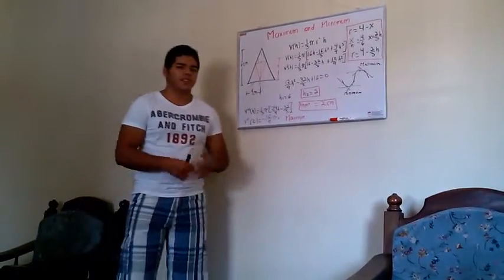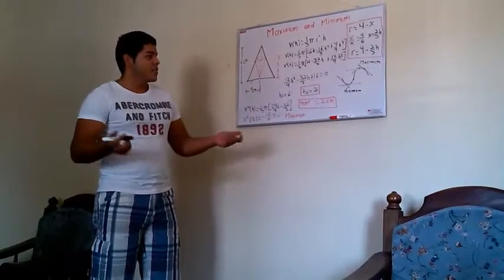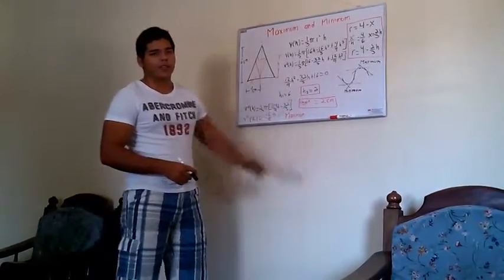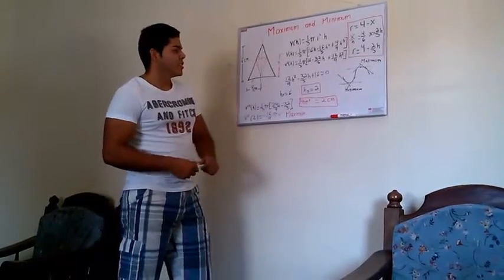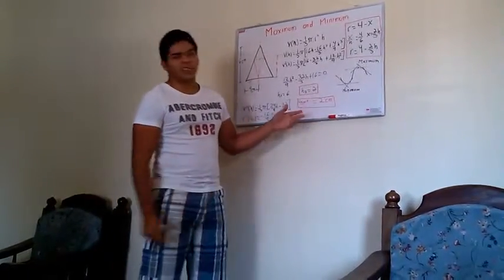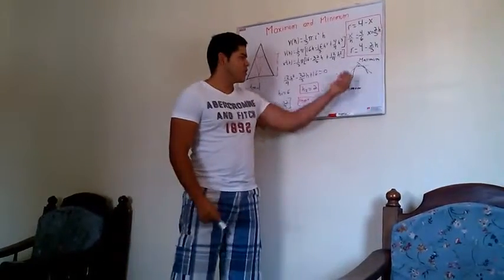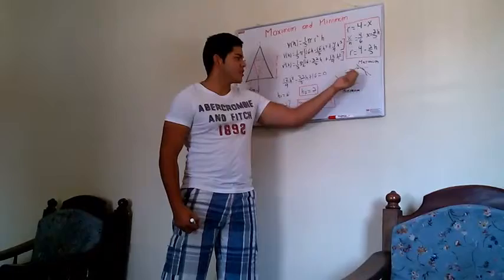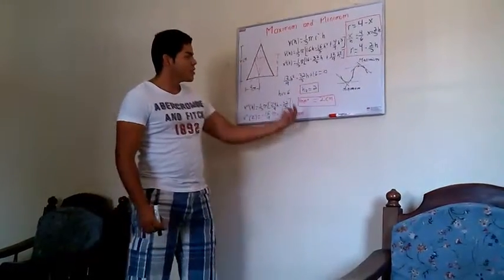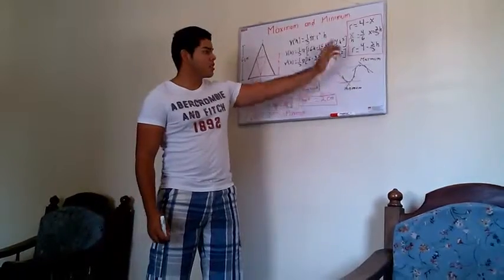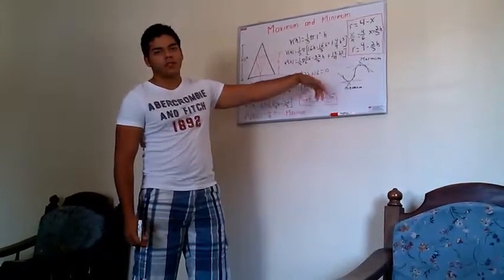This is because the derivative represents the slope of a tangent line of the curve in any point. So the slope is here. This point represents a maximum or minimum value of a function.